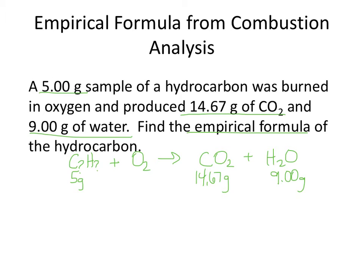If we use percent composition to figure out how many grams of hydrogen are in 9 grams of water, and how many grams of carbon are in 14.67 grams of CO2, then we can use that to figure out the number of grams of hydrogen and carbon in our unknown substance, and then we can find our empirical formula.